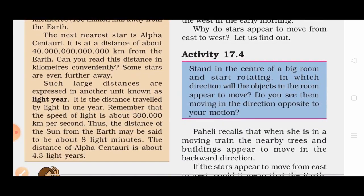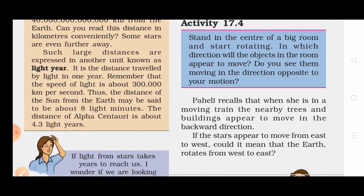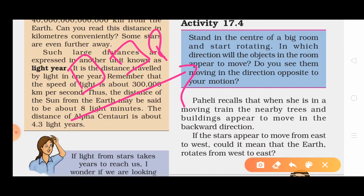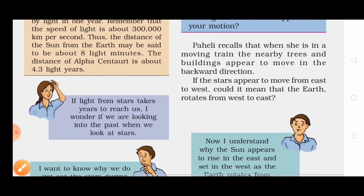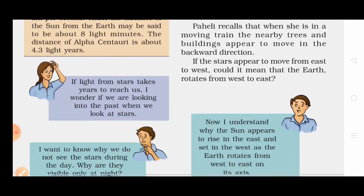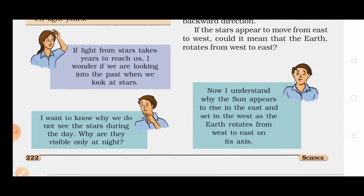Why do stars appear to move from east to west? If you stand in the center of a big room and rotate, the objects in the room appear to move in the direction opposite to your motion. If you are going on a train, the houses and trees appear to move in the backward direction. So if the stars appear to move from east to west, it means the earth rotates from west to east.